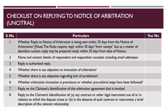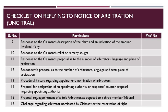If there is no underlying contract or the contract is legally invalid, these aspects could be brought out in the response to the notice. The ninth item is the response to the claimant's description of the claim and an indication of the amount involved, if any. The tenth item is on the response to the claimant's relief or remedy sought. The eleventh item in the checklist is the response to the claimant's proposal as to the number of arbitrators, language, and place or seat of arbitration.